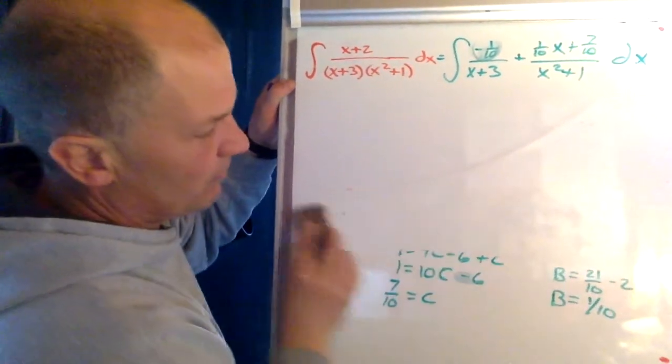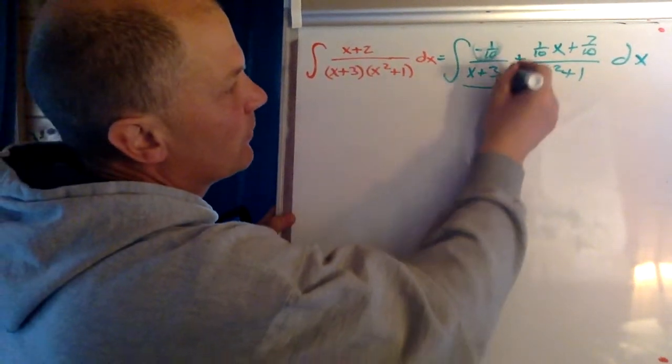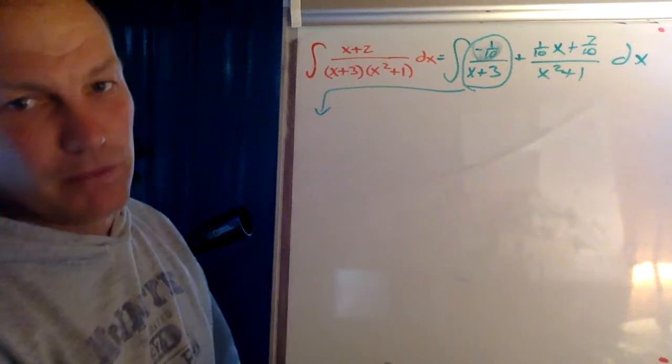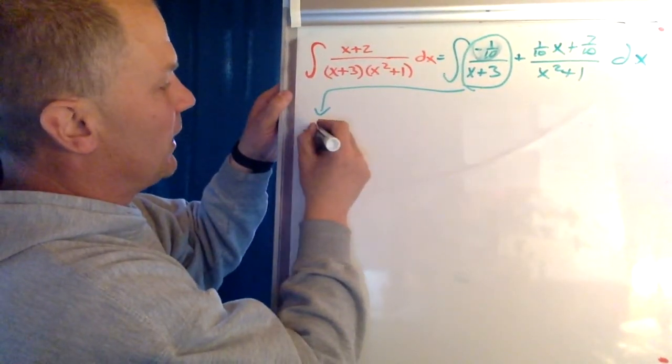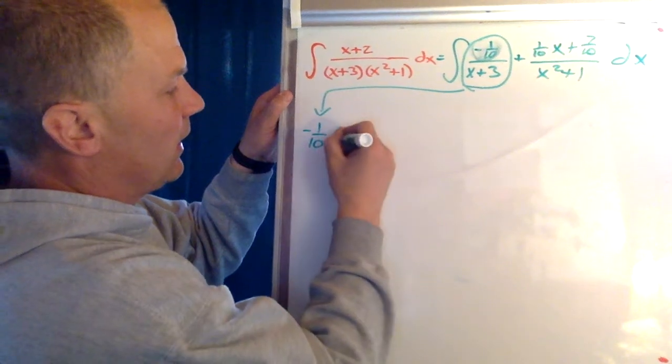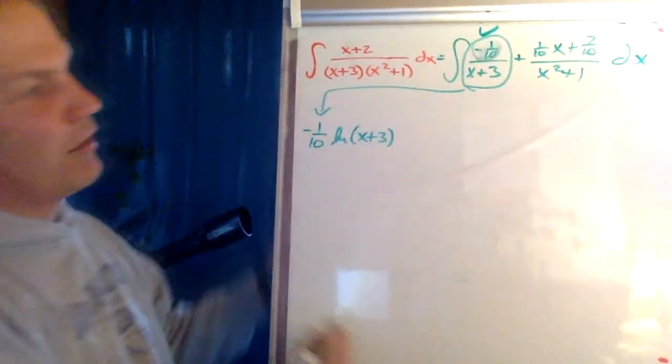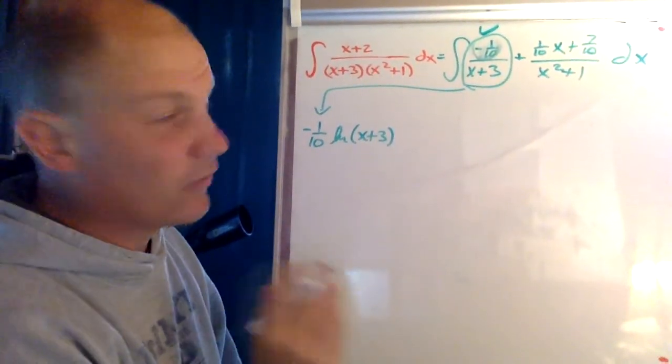The first term is wicked easy. The first term, this one here, I'm actually going to integrate right away and I'm going to just put the answer over here because we've dealt with things like this a lot of times. This is going to be negative one tenth the ln of x plus three. So this part of my equation is done. I don't need to worry about it anymore. It's all set.